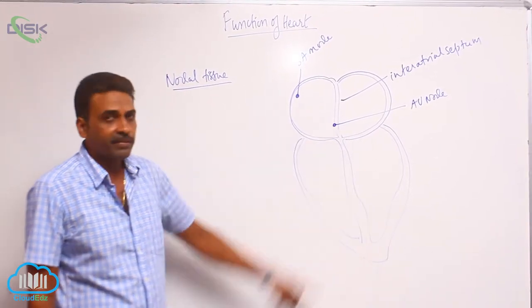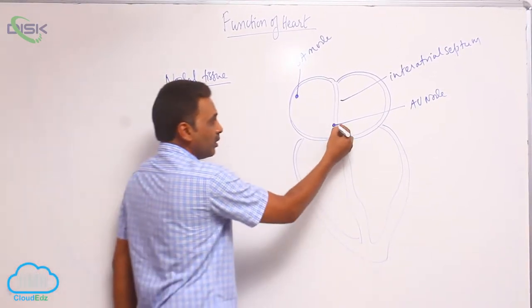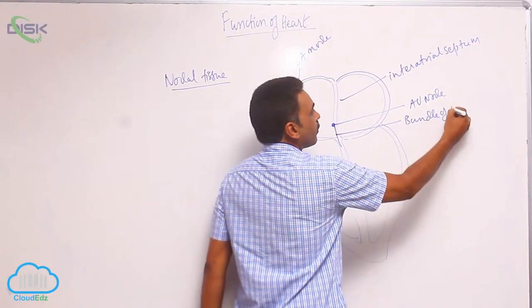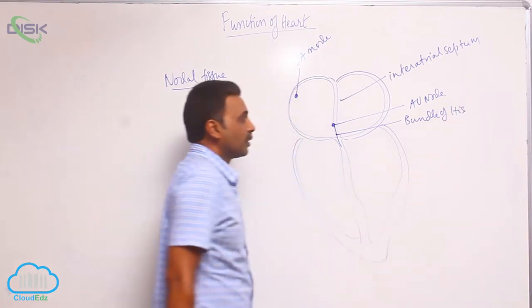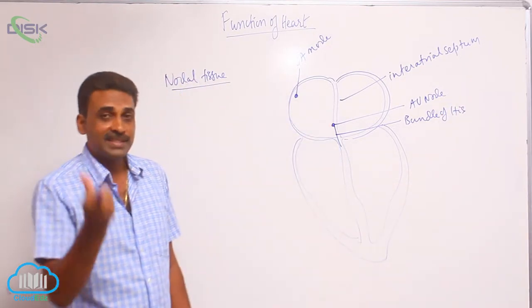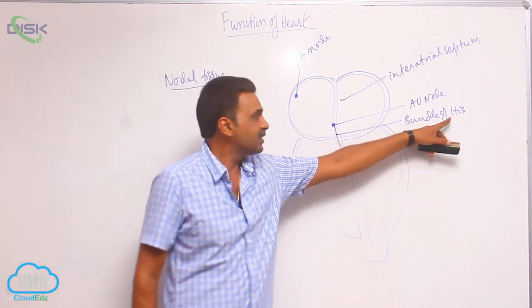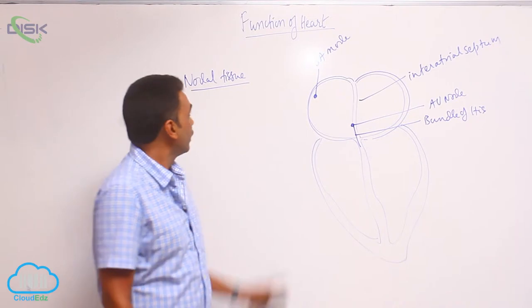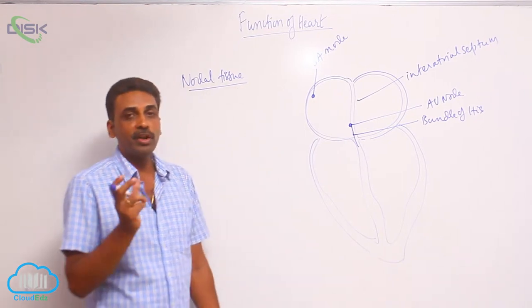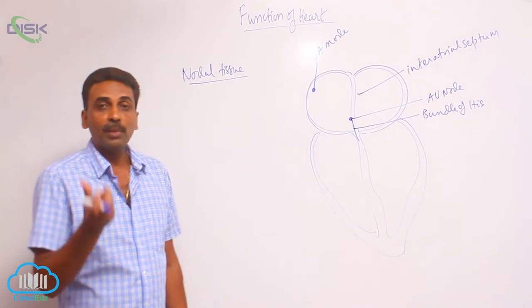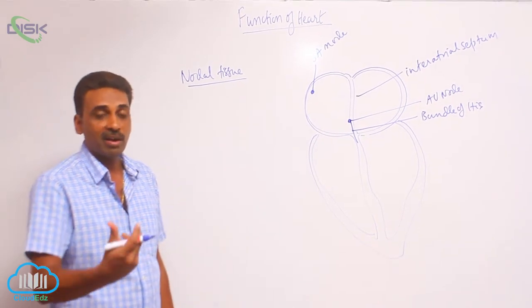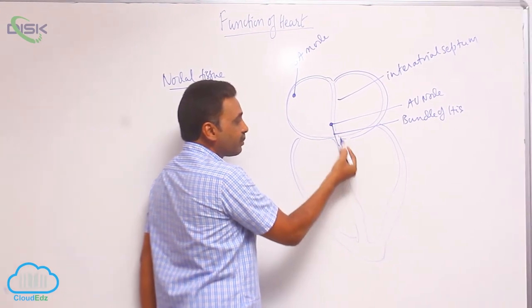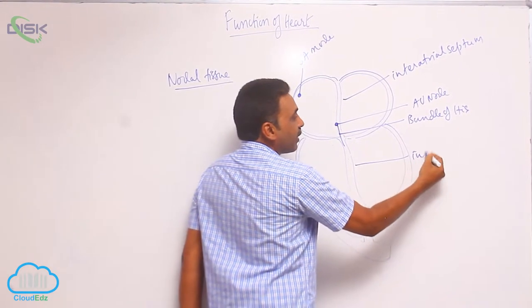Originating from the AV node, there is the bundle of His. It is called the bundle of His. His is the name of the scientist, and it is a group of cardiac muscle bundles. The total nodal tissue is made up of modified cardiomyocytes, or modified cardiac muscles. The bundle of His passes through the inter-atrial septum and enters into the interventricular septum.